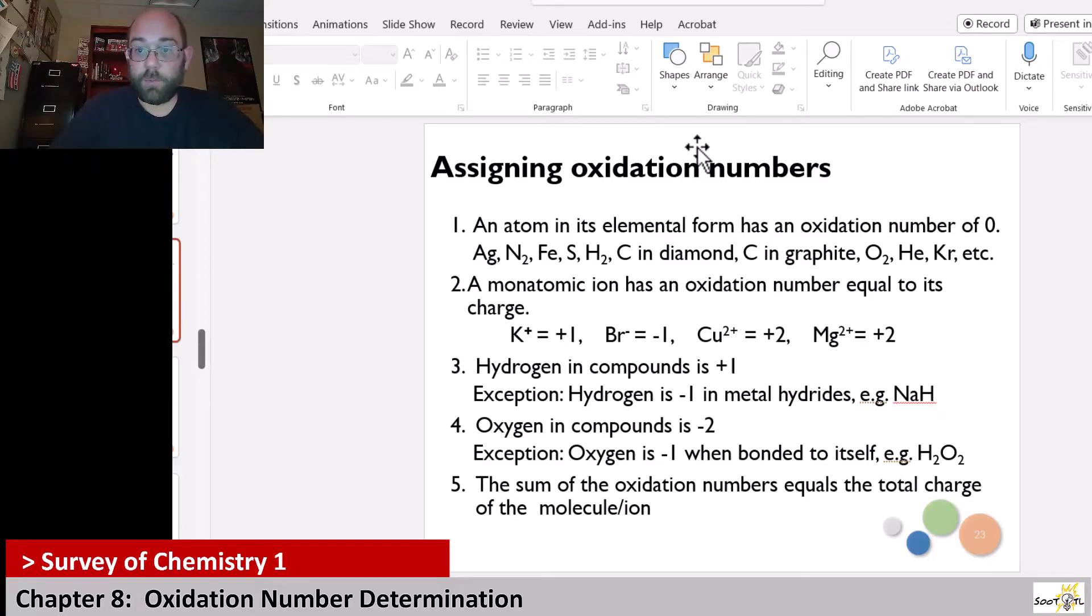All right, elemental forms—if you look at the diatomics like the Brinkelhoff's, those diatomics have oxidation of zero. Any metals that are just by themselves, they look like one atom, those are elemental forms, aka zero. Monatomic ions: their oxidation number is their charge. Hydrogens tend to be plus one.